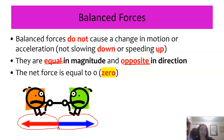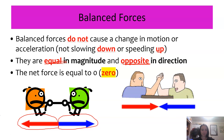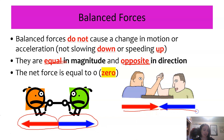In the tug of war example, the size or length of the arrows are the same, so the magnitude is the same, but the directions are opposite. In the arm wrestling example, both players are pushing with the same magnitude force because the arrows are the same length, but they are pointing in opposite directions.